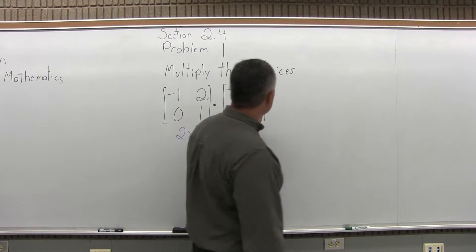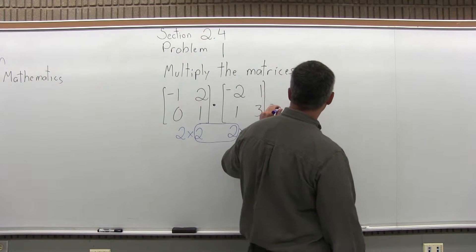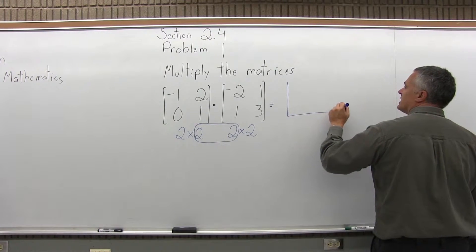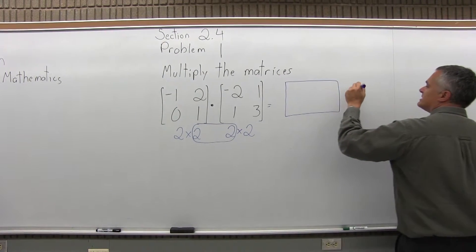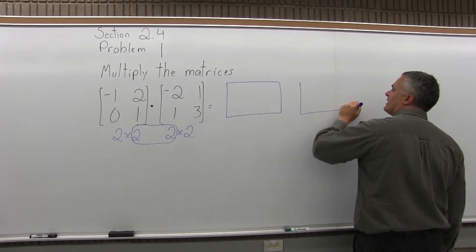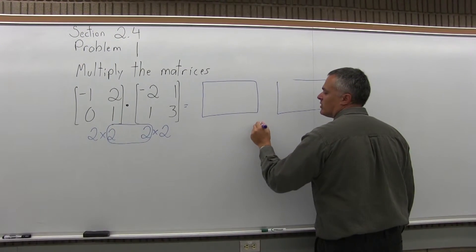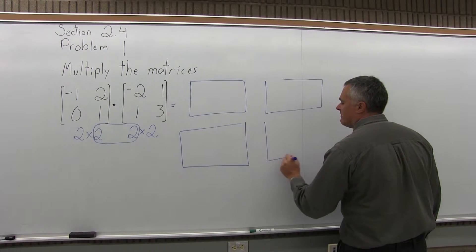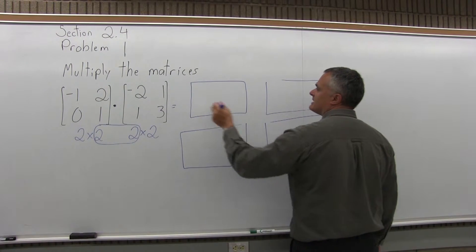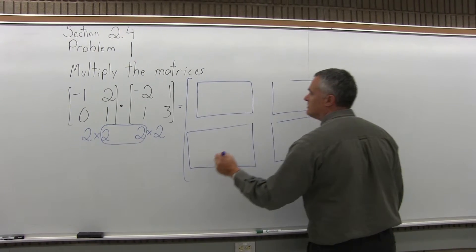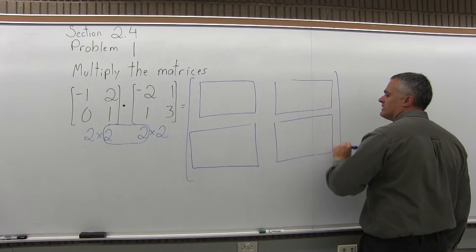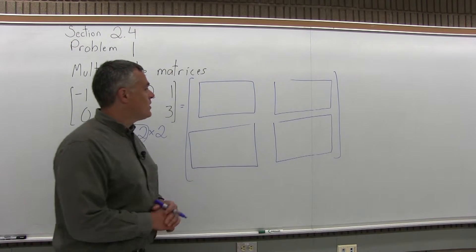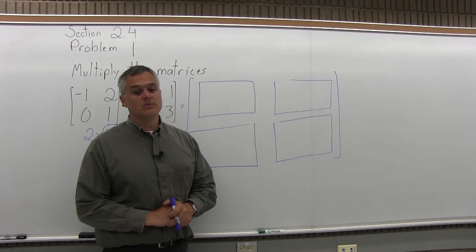Let me set up a big matrix next to this one. 2 by 2 means it will have two rows and two columns. I'll write some big boxes that I can put my work in, and then we'll clean it up afterwards. There are four numbers that we'll have to find for this 2 by 2 matrix.